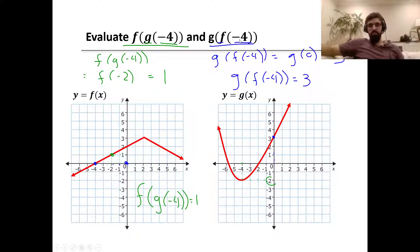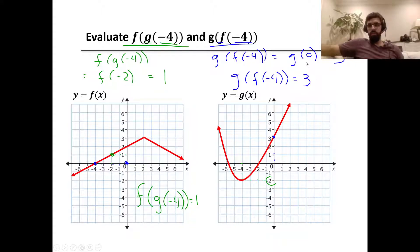For g of f of negative 4, f of negative 4 is our input for g. We take negative 4 and plug it into f first — that maps negative 4 to 0. So f of negative 4 has an output of 0, which makes 0 our input for g. And g of 0 maps to an output of 3. So g of f of negative 4 equals 3.